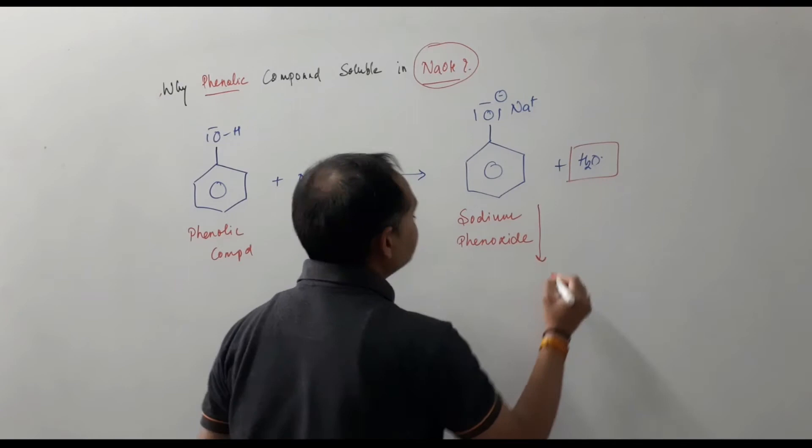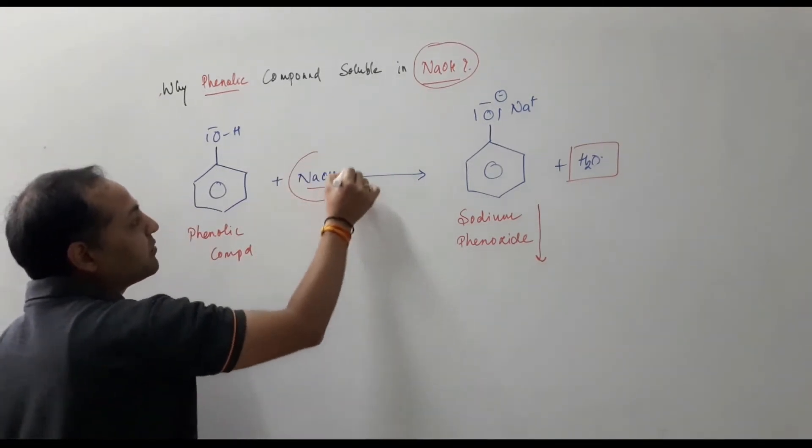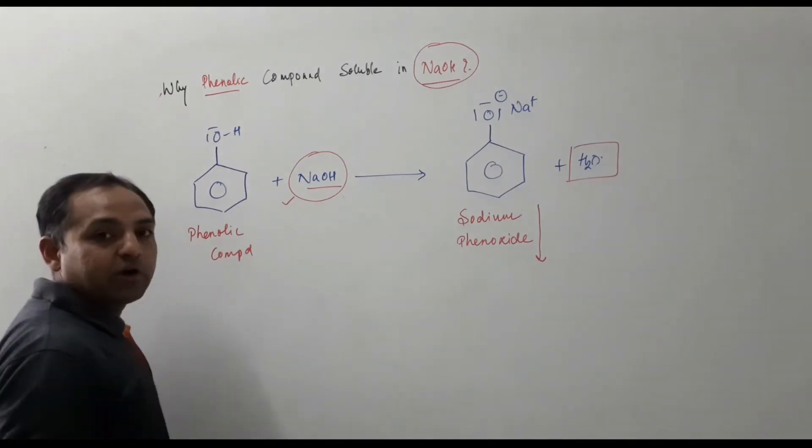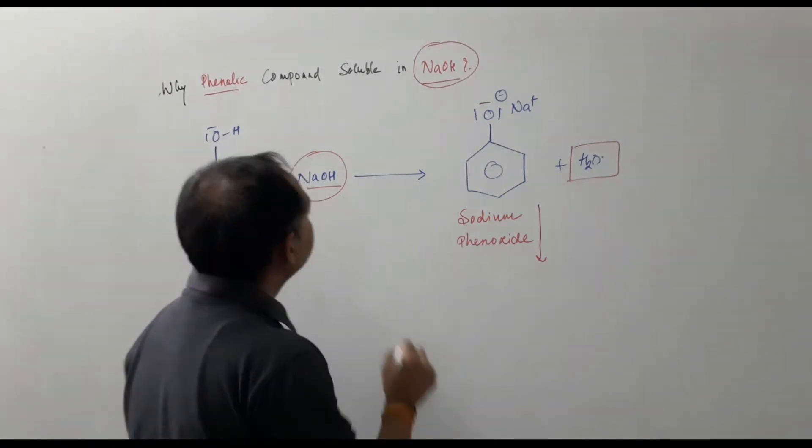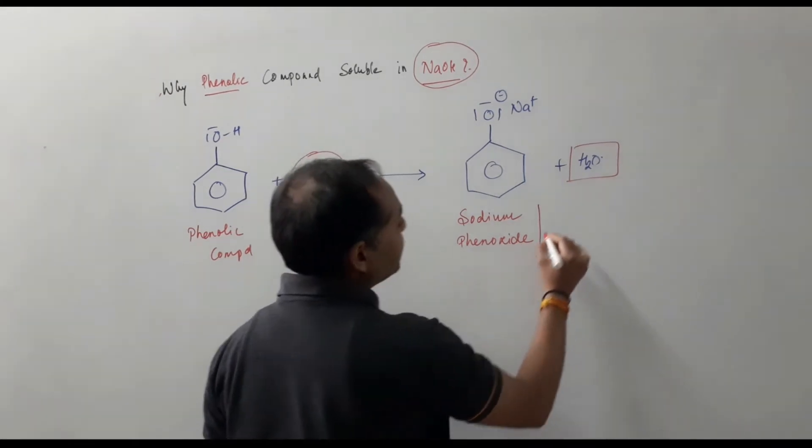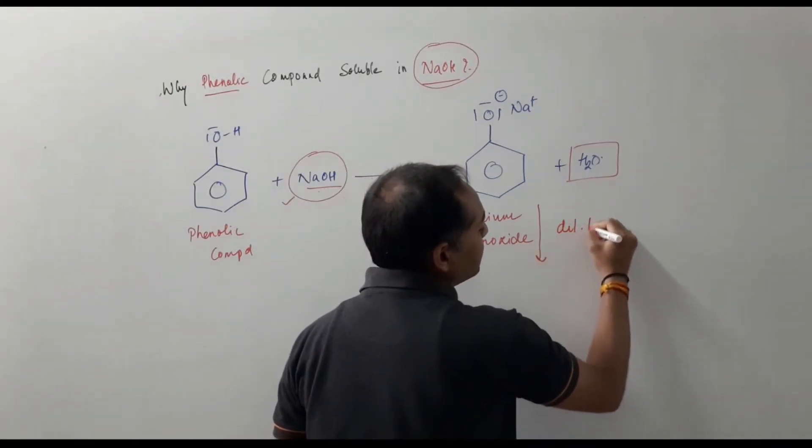How you can cross check? As you know that your phenolic compound is given to you. It is soluble in NaOH. That means you have to precipitate it out by counter solvents.